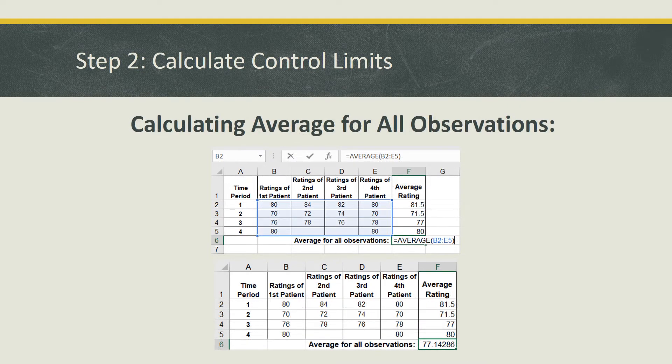Once you have the average rating for each time period, you'll then want to calculate the average for all observations. So go ahead and make an additional row for average for all observations. And you want to put in the formula equals average and select all of the columns and rows from B2 to E5, which will contain all of the rating values for patients one through four. And once you do that, you will have one single value, which is 77.14 for the average for all observations.